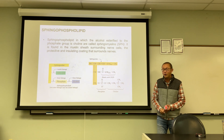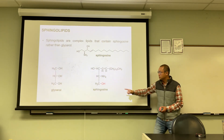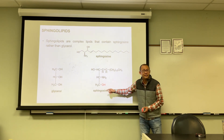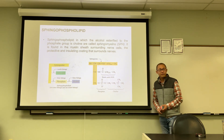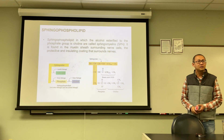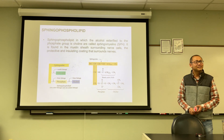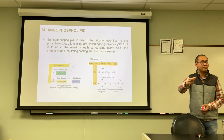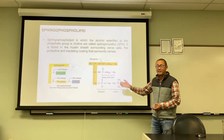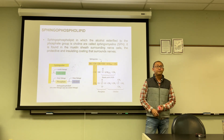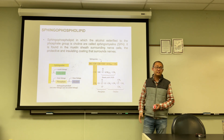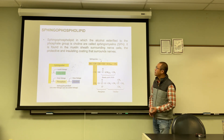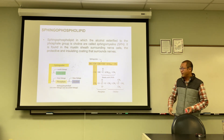This type of sphingolipid, which has a phosphate on the OH of sphingosine, is called sphingomyelin. Sphingomyelin is found in the myelin sheath surrounding neural cells. The myelin sheath is the protective layer outside neurons, and sphingomyelin is a major component of it.